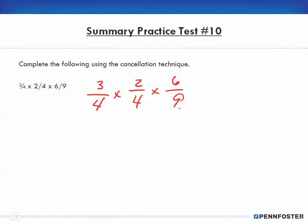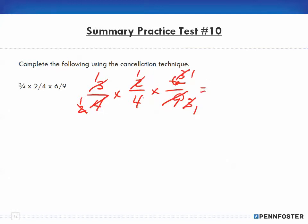All we're doing is finding wherever we can cancel. I have three here and nine here — three goes into three once and three goes into nine three times. Then two goes into two once and two goes into four two times, giving me a two. Two goes into two once and two goes into six three times. Three into three is one. So one times one times one is one, and one times four is four — my answer is one quarter.